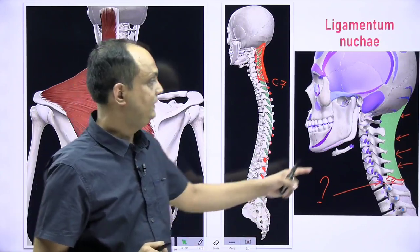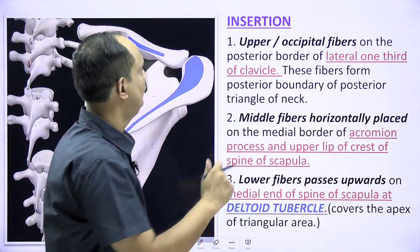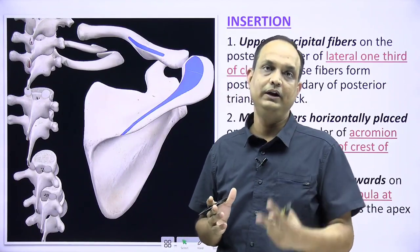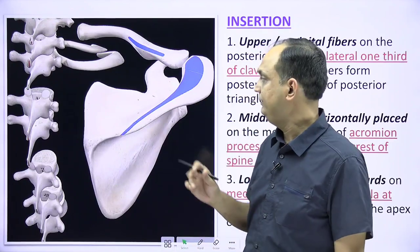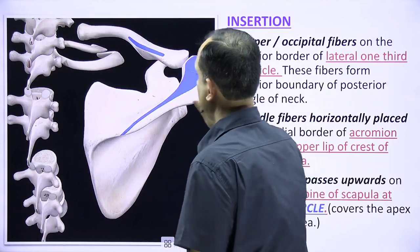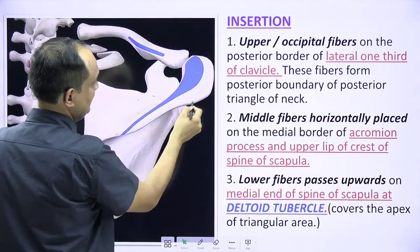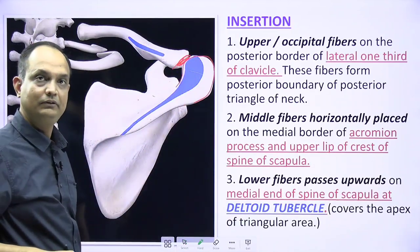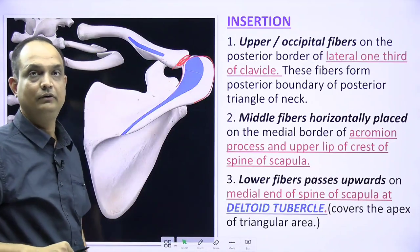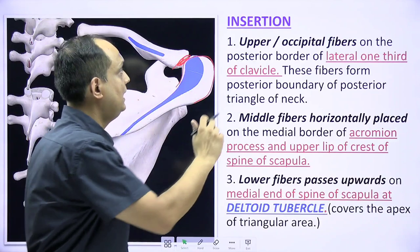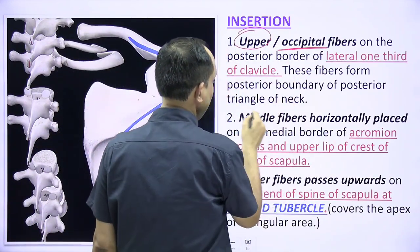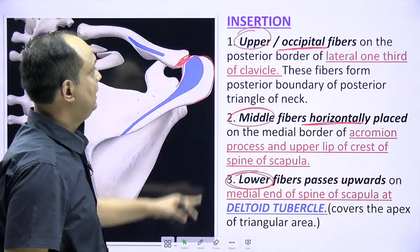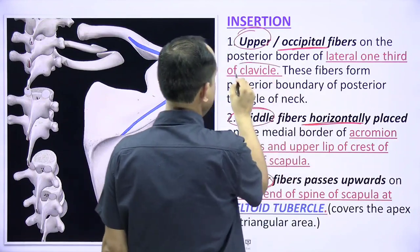For the insertion of trapezius, the muscle attaches to two bones: the clavicle and the scapula. The scapular spine continues with the acromion process, which forms the acromioclavicular joint with the clavicle. The trapezius is divided into three parts: upper fibers from the occipital bone, middle horizontal fibers, and lower fibers from the lower thoracic spines. The upper fibers insert on the lateral one-third of the clavicle.